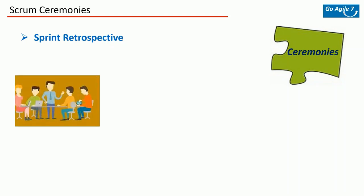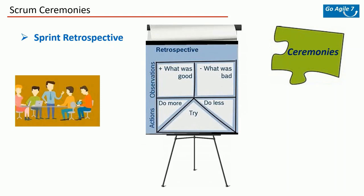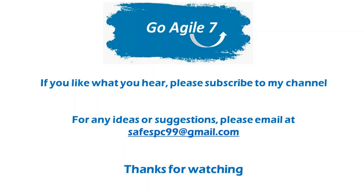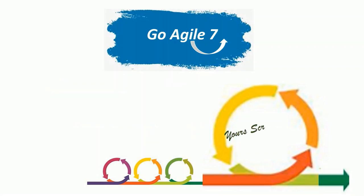The last scrum ceremony is the Scrum Retrospective. This is where scrum members come together to do an appraisal of their work — a self-inspection on how they are executing tasks. Things like what went right, what went wrong, what can be improved, what needs to be stopped — these sorts of things are discussed, helping the team become more productive as they move forward. So those are the four scrum ceremonies. We completed scrum roles and scrum ceremonies. There are so many other things to cover and we will catch up with those in upcoming sessions. With that we conclude Go Agile 7 — keep practicing agile, stay safe, and do good. See you.